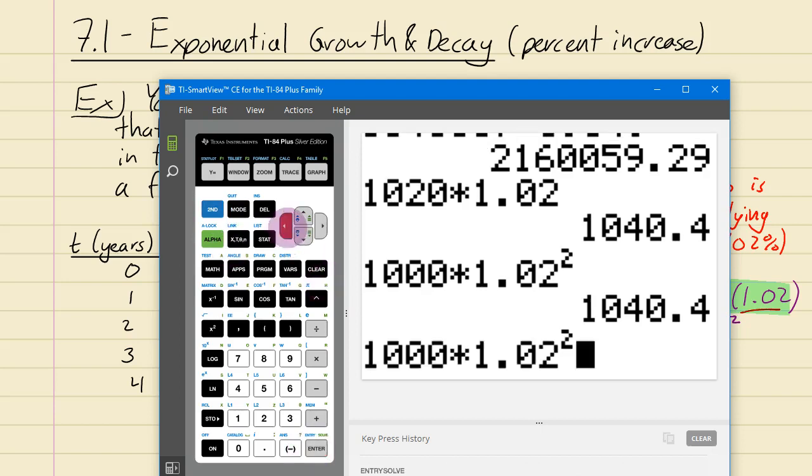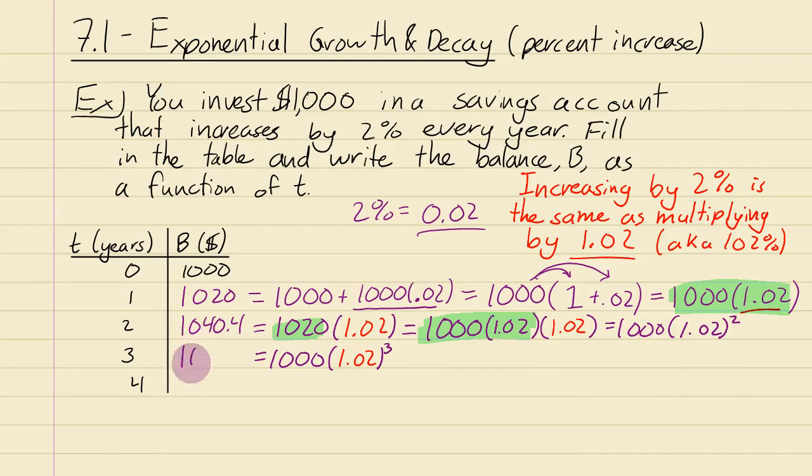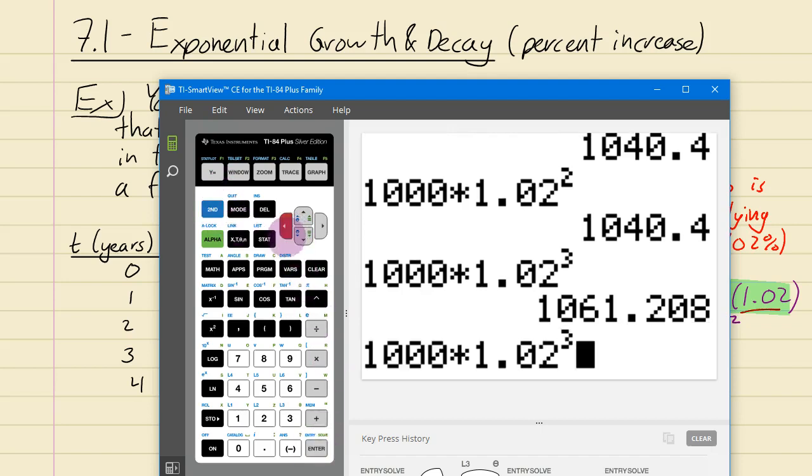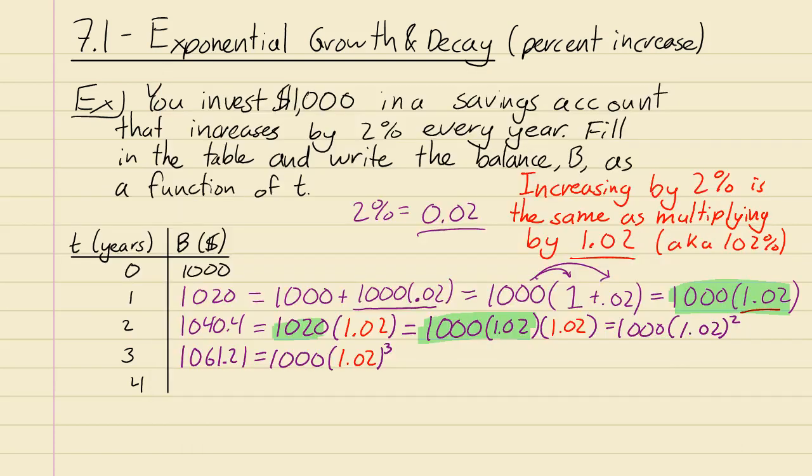I'm going to take that previous entry and just replace that 2 with a 3 and you get 1,061.21. And then second entry to get the previous entry, replace that 3 here with a 4 and you get 1,082.43.